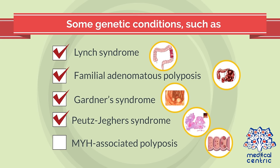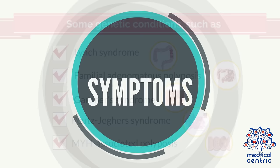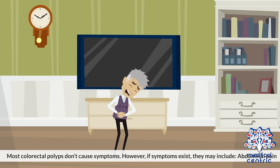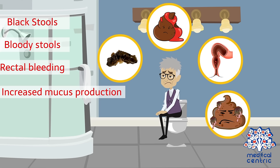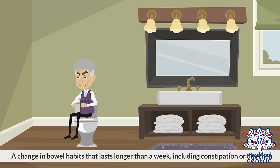Some genetic conditions also increase risk, such as Lynch syndrome, familial adenomatous polyposis, Gardner syndrome, Peutz-Jeghers syndrome, and MUTYH-associated polyposis. Most colorectal polyps don't cause symptoms; however, if symptoms exist, they may include abdominal pain, iron deficiency anemia — which can cause lightheadedness, weakness, fainting, pale skin, or rapid heart rate — black stools, bloody stools, rectal bleeding, increased mucus production, and a change in bowel habits lasting longer than a week, including constipation or diarrhea.